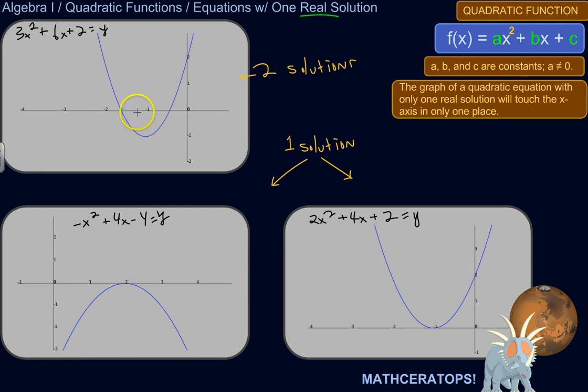So this point would be a solution to this function, and this point would be a solution. And that's why when you're solving these algebraically, like for this one, 3x squared plus 6x plus 2, you could do something like 3x squared plus 6x plus 2 equals 0, because you want to know when does y equal 0, meaning when does it cross the x-axis.